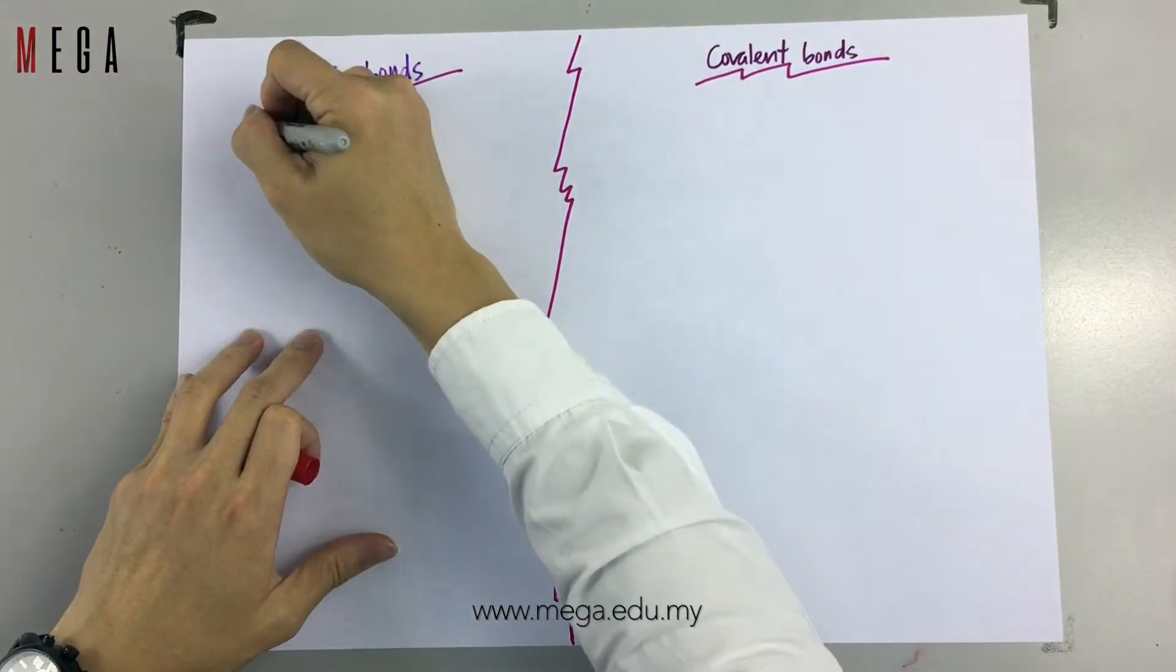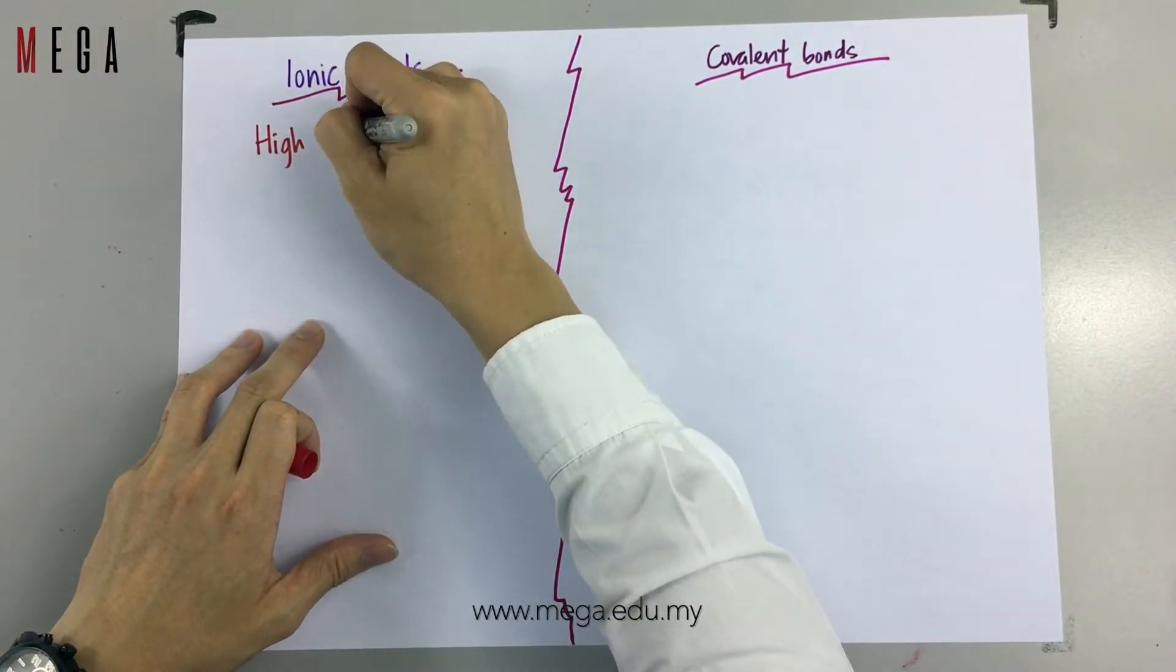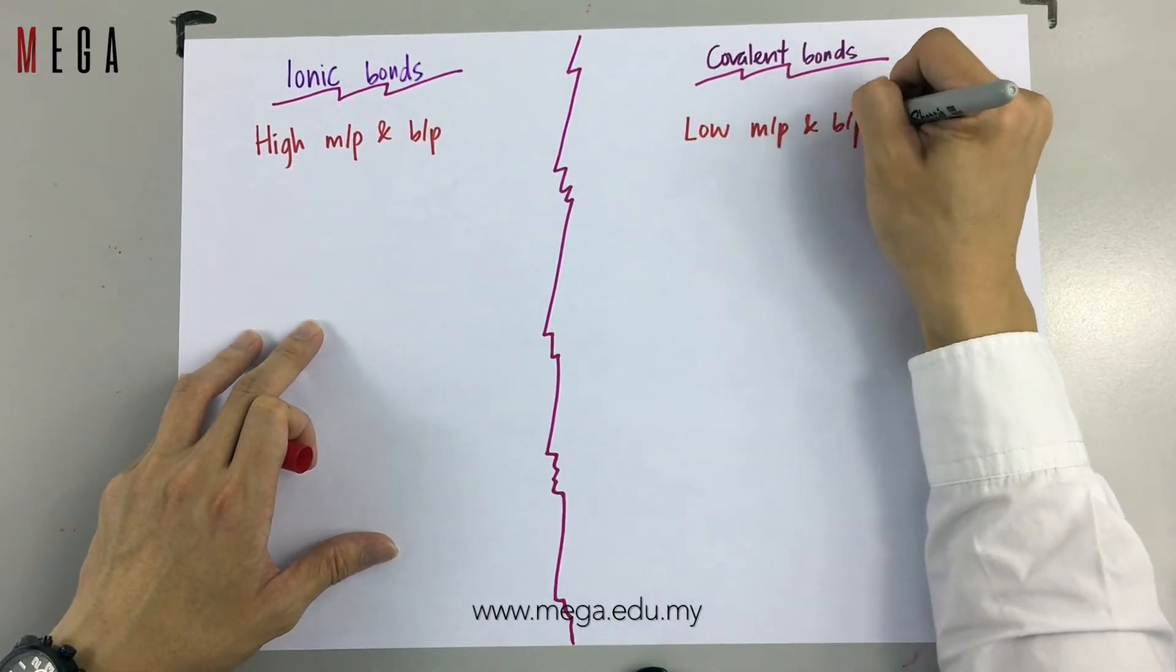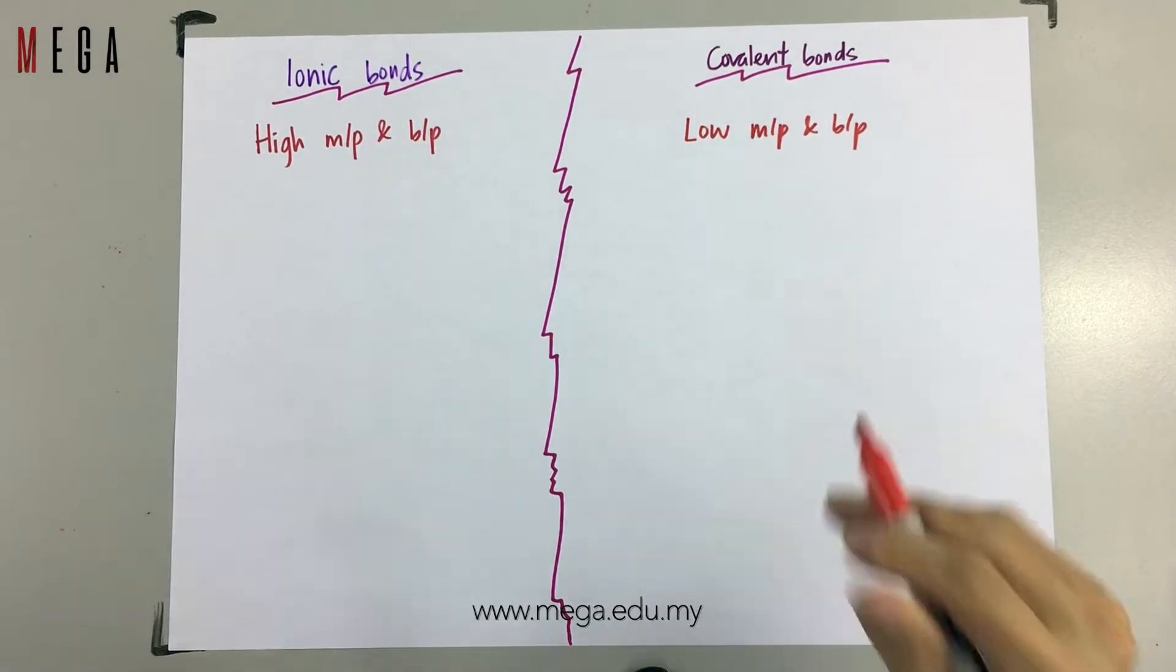Today we are going to talk about the differences between ionic bonds and covalent bonds. Ionic compounds have high melting point and boiling point. Covalent compounds have low melting points and boiling point.